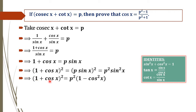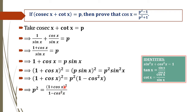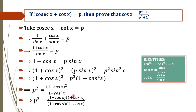This implies 1 plus cos x whole square equals p squared times 1 minus cos squared x. By simplifying and taking each and every term of cos x together, we will get 1 plus cos x whole square divided by 1 minus cos squared x equals p squared. Now, 1 minus cos squared x can be rewritten as 1 plus cos x into 1 minus cos x. By simplifying, 1 plus cos x will cancel, and the term remaining is 1 plus cos x divided by 1 minus cos x.